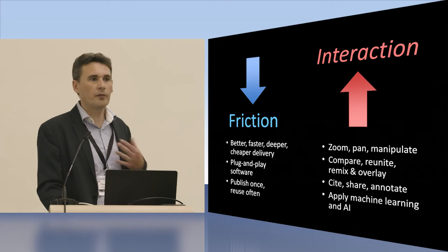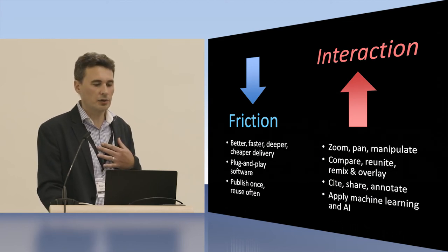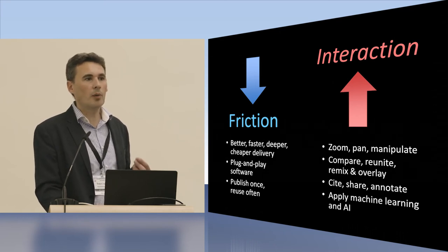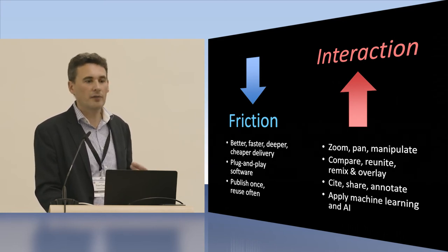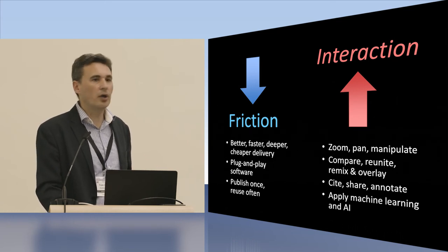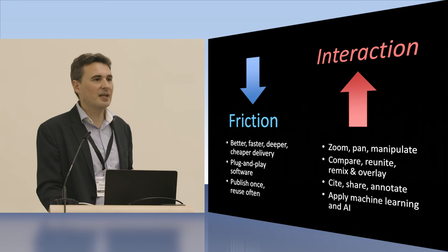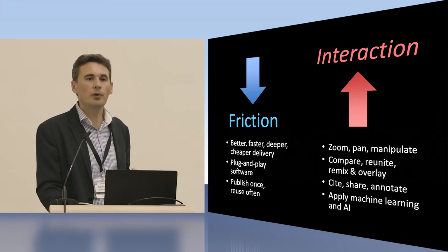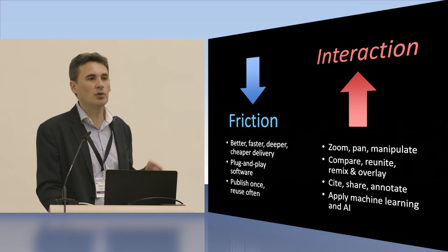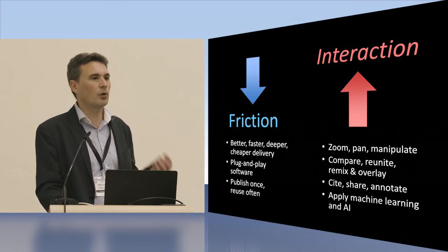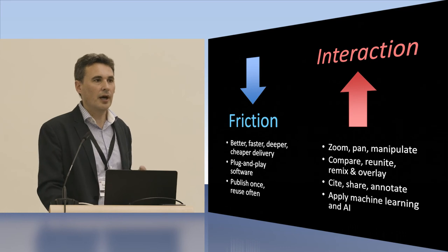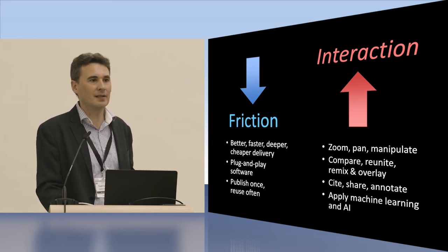In sum, from Stanford's perspective and historically, IIIF is important for two things. First, interoperability reduces the friction of delivering and using digital content on the web — it's better, faster, deeper, and cheaper delivery of your assets. You can plug and play different types of software and publish content once and reuse it in ways you never imagined. At the same time, it's not just viewing images — it's really interacting with them: deep zoom, panning and manipulating, mixing materials from different collections, the ability to cite, share, or annotate, and these up-and-coming machine learning and AI algorithms offer promise far beyond the capabilities of any single institution.